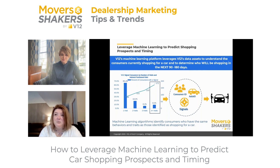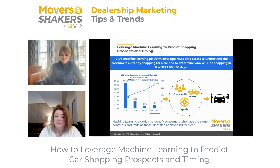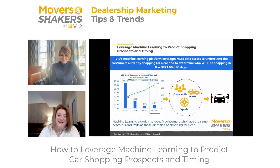Applying this model to our entire 250 million household data set, we can isolate which people are most likely to be in market for a car in the next three to six months. That gets us to them early — and if you know about it before they know about it, it's a model prediction.